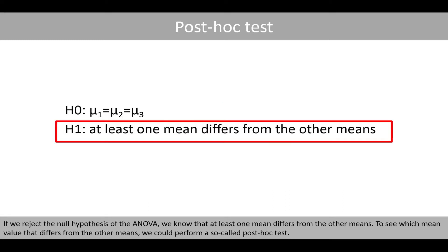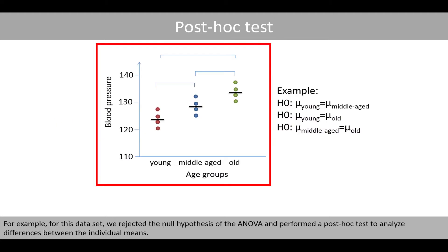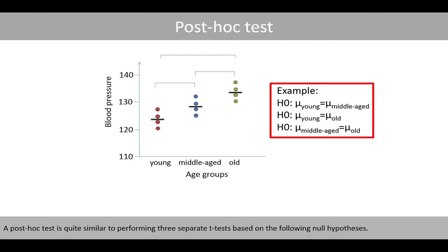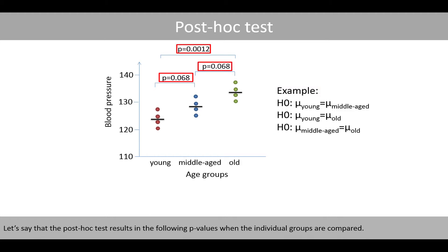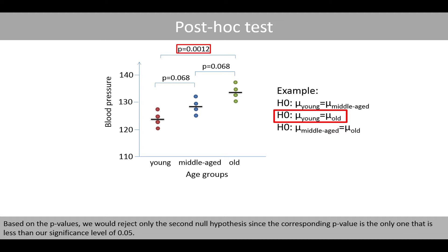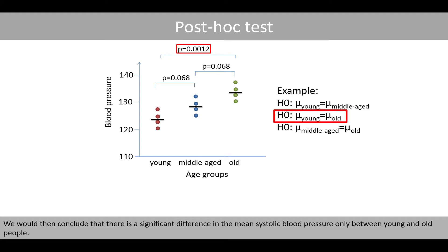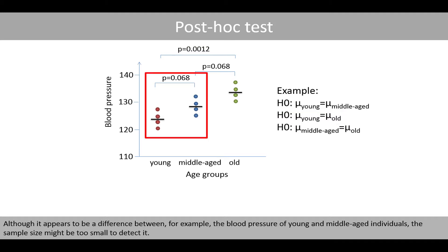If we reject the null hypothesis of the ANOVA, we know that at least one mean differs from the other means. To see which mean value differs from the other means, we could perform a so-called post-hoc test. For example, for this dataset, we rejected the null hypothesis of the ANOVA and perform the post-hoc test to analyze the differences between the individual means. A post-hoc test is quite similar to performing three separate t-tests based on the following hypotheses. Let's say that the post-hoc test results in the following p-values when the individual group means are compared. Based on the p-values, we would reject only the second null hypothesis since the corresponding p-value is the only one that is less than our significance level of 0.05. We would then conclude that there is a significant difference in the mean systolic blood pressure only between young and old people. Although it appears to be a difference between, for example, the blood pressure of young and middle-aged individuals, the sample size might be too small to detect it.